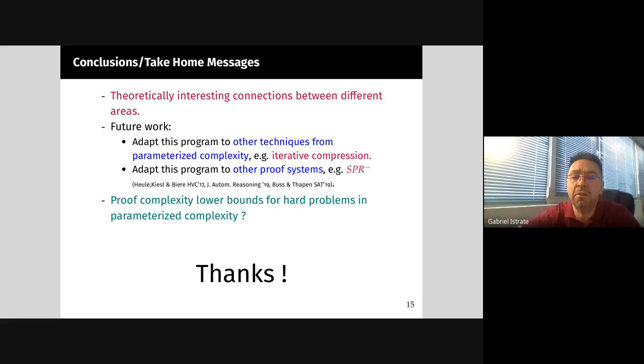On the other hand, to some extent our result, although stated for Frege proofs, could be adapted to other proof systems. In particular, we're especially interested in a system called SPR minus. This is a kind of proof system that came from the SAT solving literature - proof systems with no new variables. It has its challenges because you're not allowed to do things that you're doing in extended Frege. Relevant work here is by Heule and others, and also by Buss and Thapen in SAT 2019.